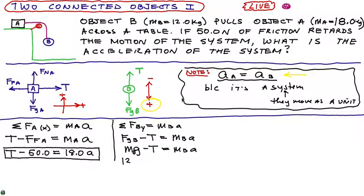And if we plug in the numbers, 12 times 9.8 minus T... 12 times 9.8 minus T is equal to 12A. 12 times 9.8, 118 minus T is equal to 12A.